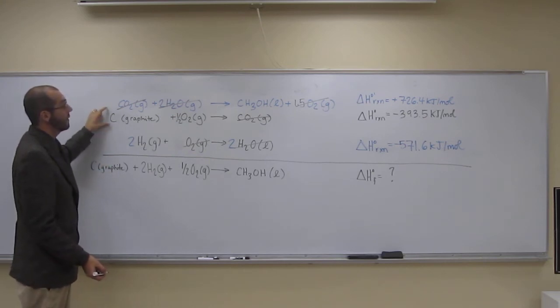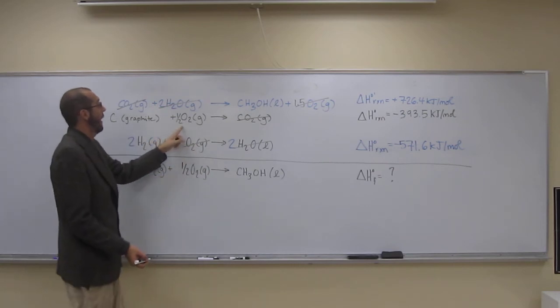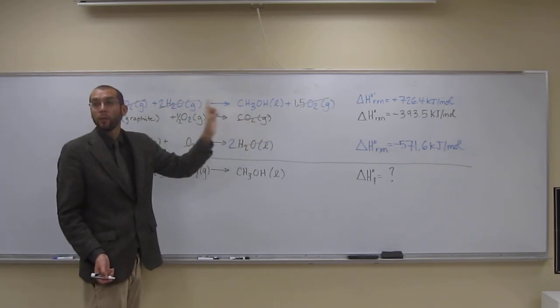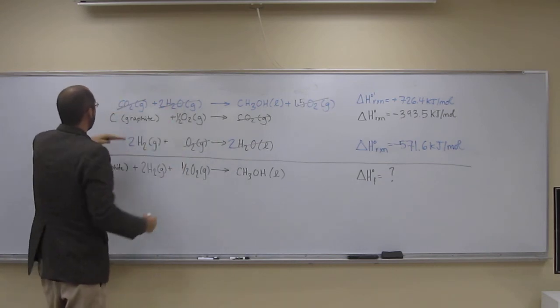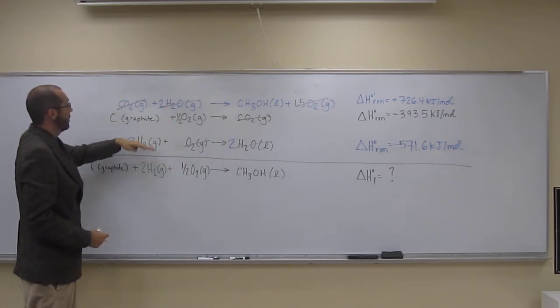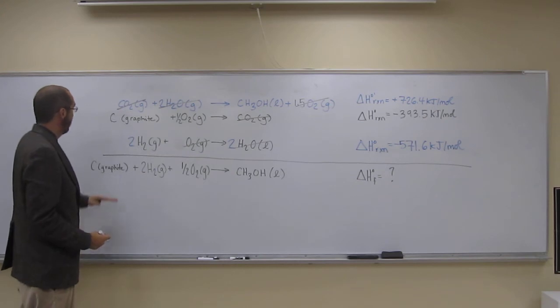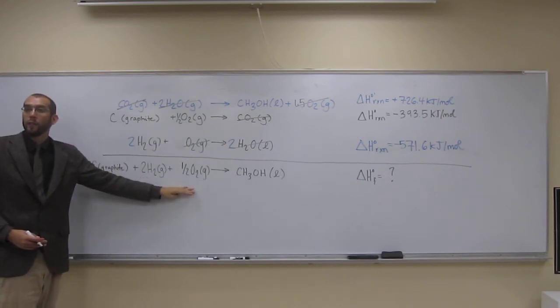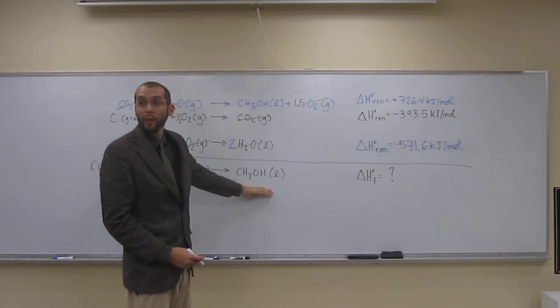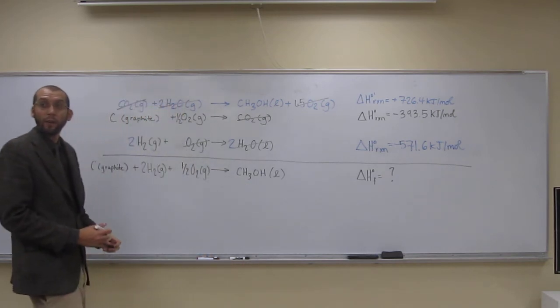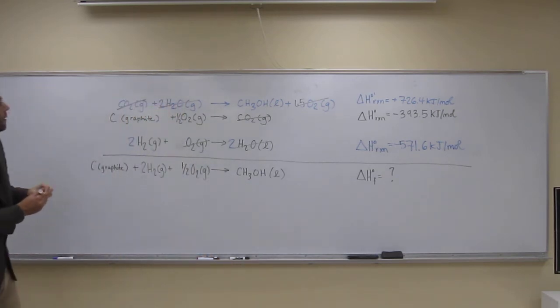So what do we have here? C graphite, there's none over there. H2s, there's none over there. Half O2, is there any more O2s over there? No. And then we add these things up. So we got C graphite plus two H2s plus one half O2. Is that what we have down here? Yes. And over here, all we've got is the one methanol liquid and that's what we have over there. So we've got it right.